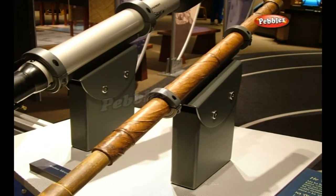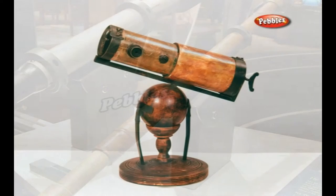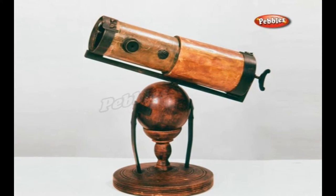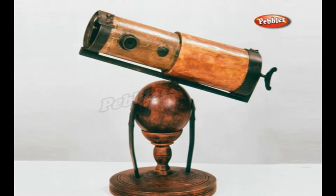Galileo's telescope was a refracting telescope. Isaac Newton, who was born the same day Galileo died, invented another kind of telescope called a reflecting telescope.